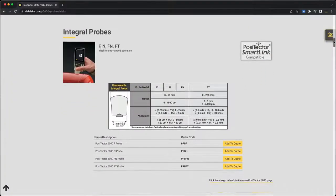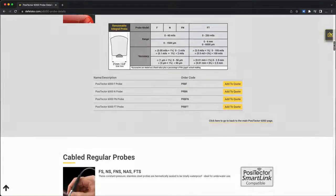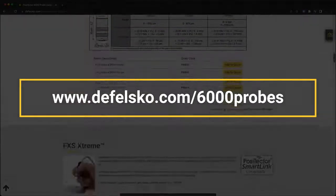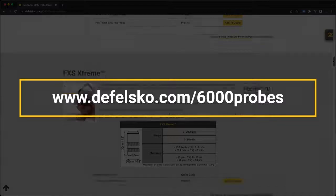View all of the PosiTector 6000 probe models at defelsco.com/6000probes. A helpful link to the ordering guide PDF is included in the description.